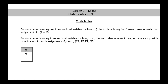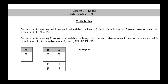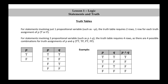For statements involving two propositional variables, such as P∧Q, the truth table requires four rows, as there are four possible combinations for truth assignments of P and Q: true-true, true-false, false-true, and false-false. Notice how we have four different truth assignments here. As an example, we have the conjunction.